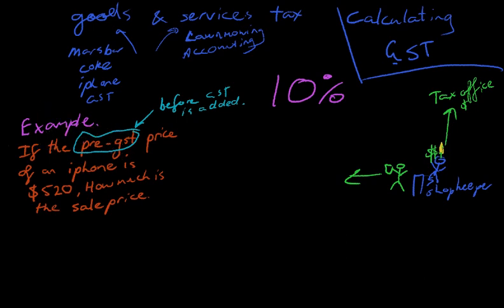Now, the formula that we're going to use for this is sale price equals pre-GST price times 1.1.